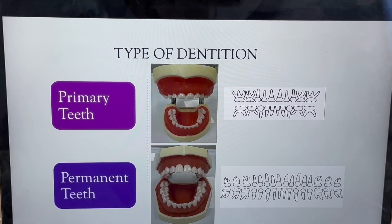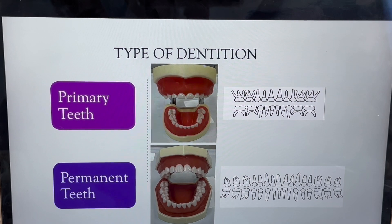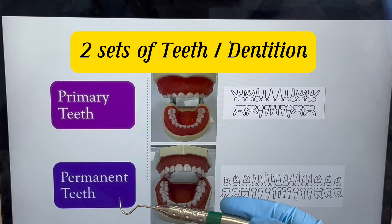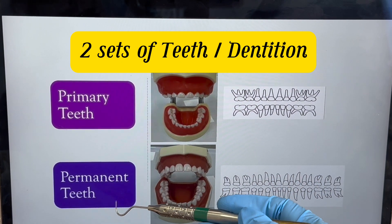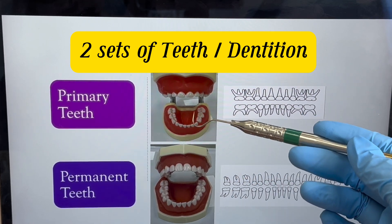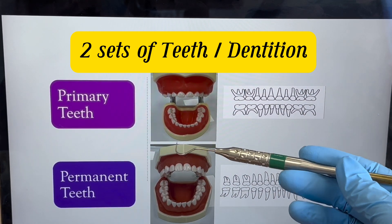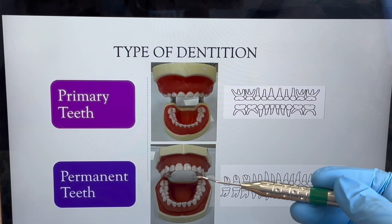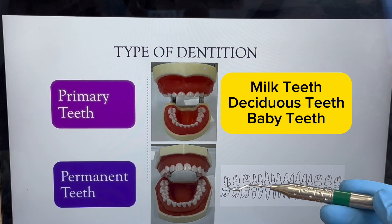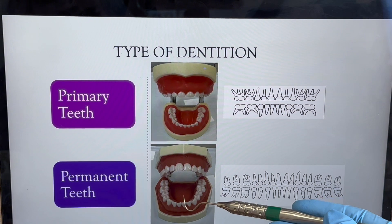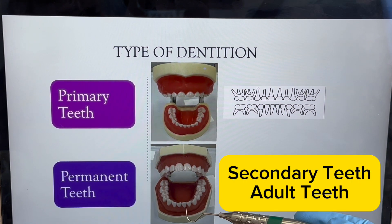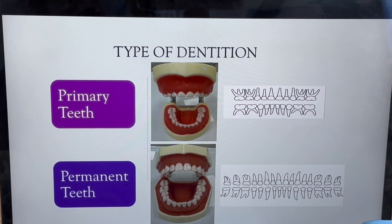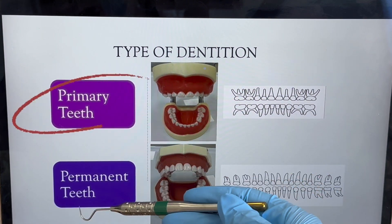What do we mean by dentition? We humans have two types of dentition: primary dentition and permanent dentition. The primary dentition is our first set of teeth, also known as milk teeth, deciduous teeth, or baby teeth. For the permanent dentition, another name would be secondary teeth or adult teeth. For the purpose of naming teeth, we are only going to say primary or permanent.